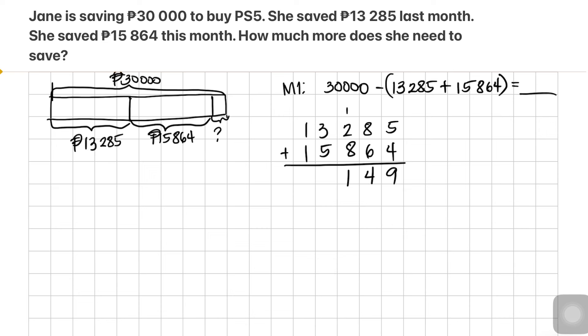Write 1 hundred and carry the 1 to the thousands. 3 thousands plus 5 thousands plus 1 thousand is 9 thousands. Then 1 ten-thousand plus 1 ten-thousand is 2 ten-thousands. So 13,285 plus 15,864 equals 29,149.